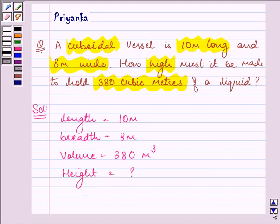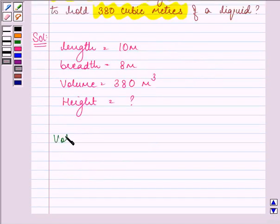So we can easily find out by knowing the relation that the volume of a cuboidal vessel will be equal to its length into breadth into height.